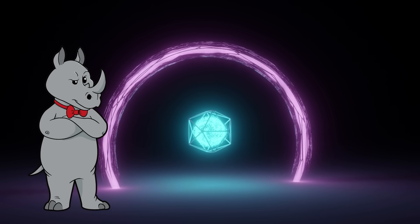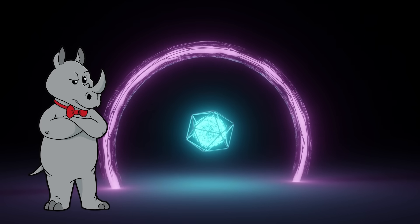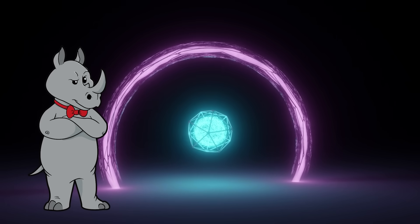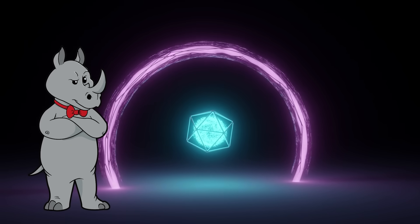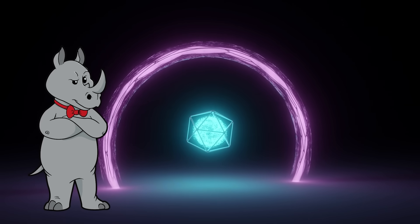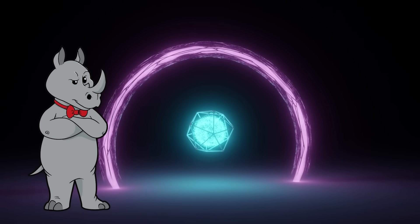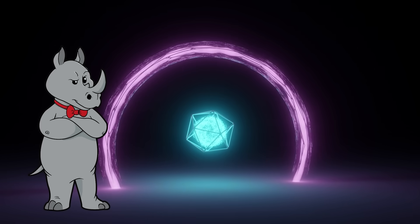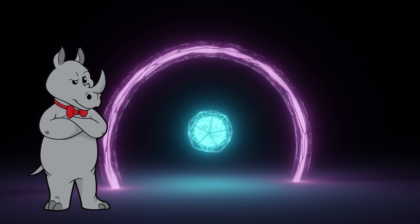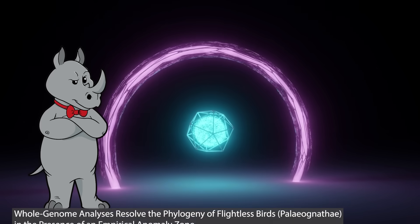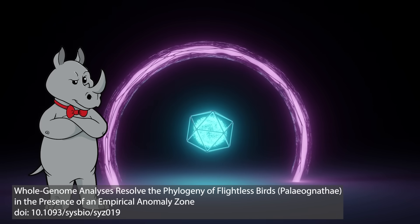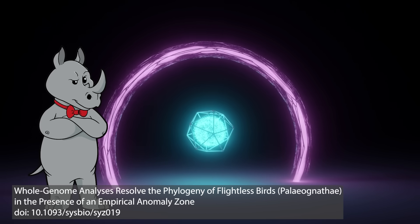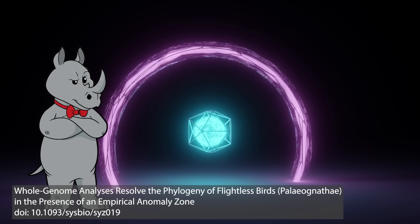Aside from being logically fallacious, this ignores the fact that the reason the ratites are such a problem in the first place is exactly because evolutionary biologists do not ignore difficult data. Morphologically as well as geographically we would expect ostriches and elephant birds to be pretty closely related, so the discovery that elephant birds are more closely related to kiwis than to ostriches was unexpected. But that didn't stop them from doing that research and then publishing it.